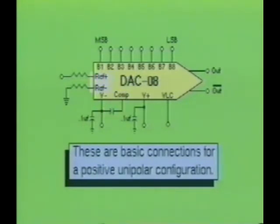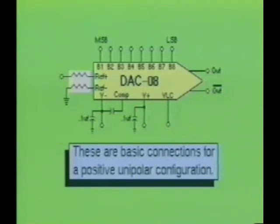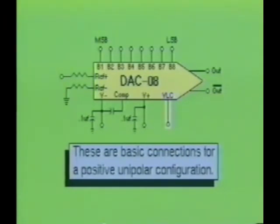The reference inputs are fed into the inverting and non-inverting inputs of the internal operational amplifier. In most cases, the reference resistors will be of equal value. The values of these resistors are chosen to set the level of the reference current. When used in TTL applications, these values will typically be about 5,000 ohms. The terminal labeled VLC is the threshold voltage terminal, which controls the high-low voltage levels recognized by the digital input terminals. This special feature allows the DAC-08 device to become compatible with most digital logic families.